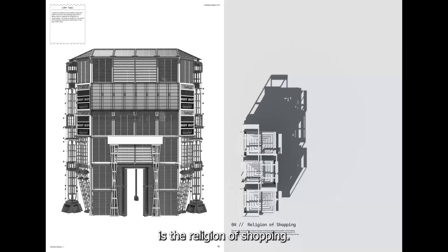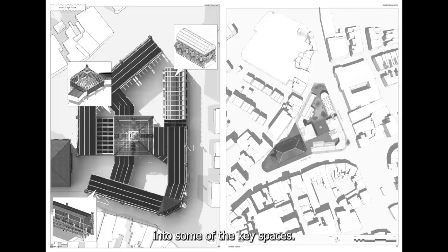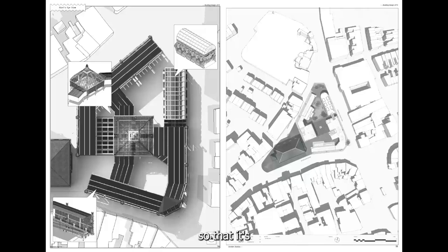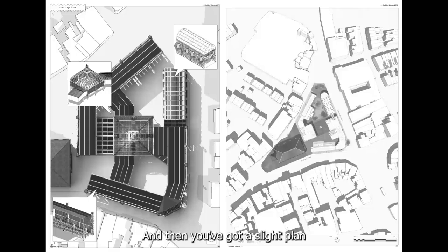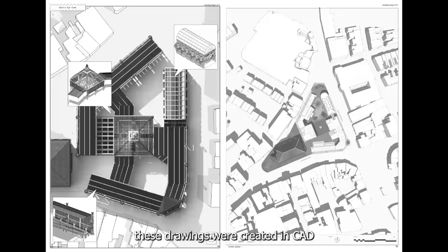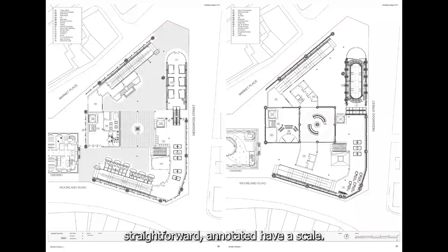The last section is called the Religion of Shopping — more of the final drawings, renders, plans, and sections. The first one is a plan render looking at the building as a whole from the top, and also zooming into some of the key spaces: the Garden of Eton, the Hall of Forgotten Artifacts, and the High Street Promenades. These promenades are designed so that it's like recreating the high street itself, leading into the building and into the first floor, because the ground floor is quite open and you're able to walk through as if it was a normal high street. There's also a site plan on the right — these drawings were created in CAD, exporting elements from SketchUp models and then drawing in the rest.